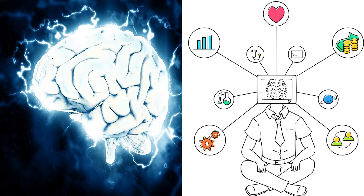The brain contains certain specialized cells which continuously pass messages to all the parts of the body. Now let's understand about these specialized cells and what they are called.